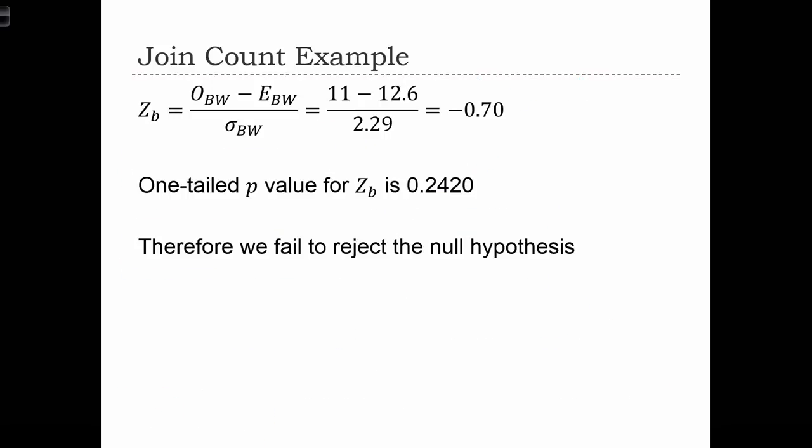So now we need to plug everything back into our z statistic. The observed number of black-white joints was 11, and the expected was 12.6. And we calculated the standard error to be 2.29. In the end, we get a z-score of minus 0.7.